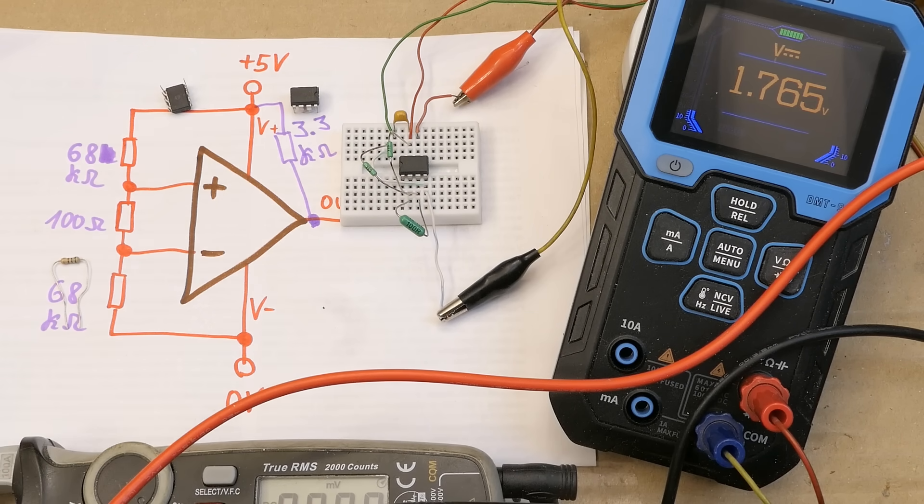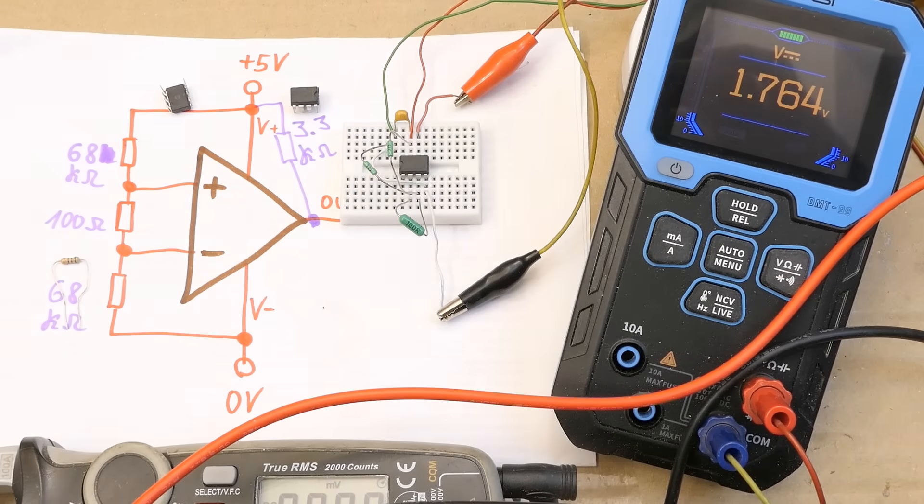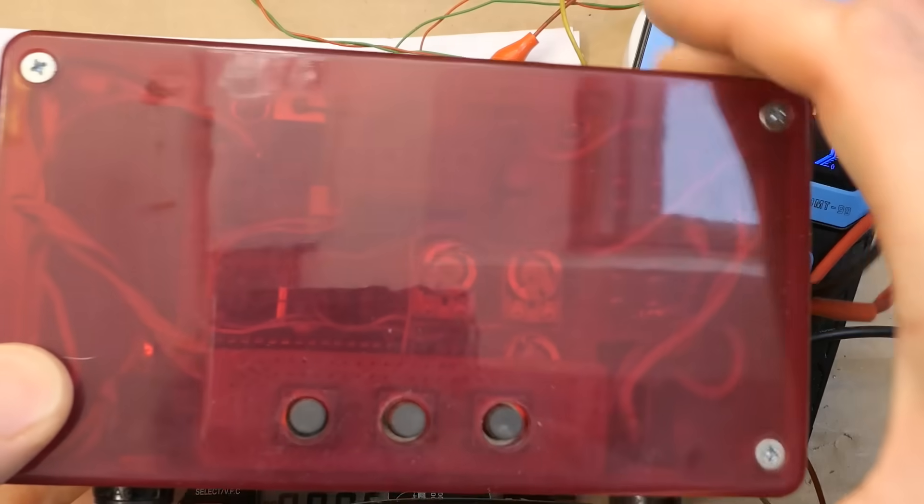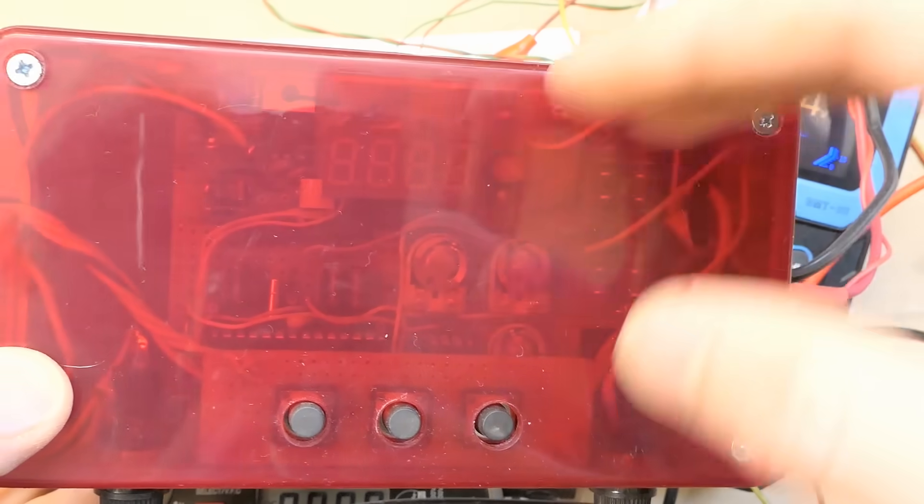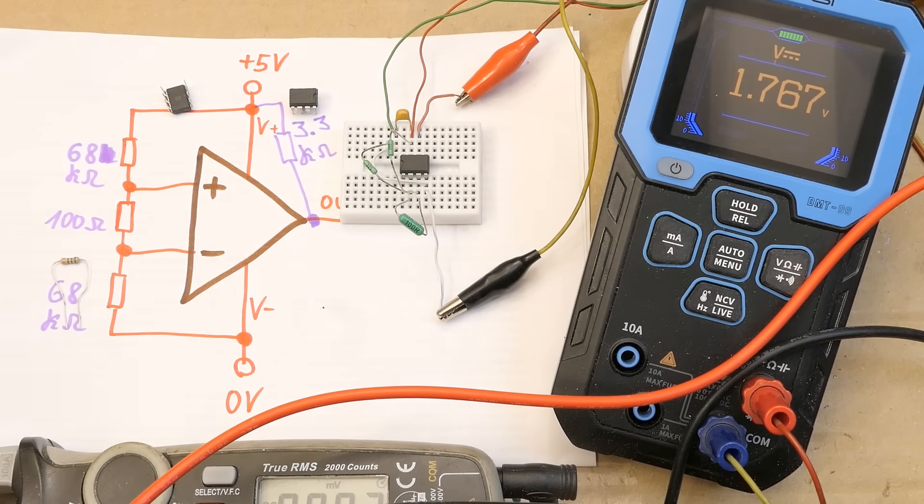Now let's test it near the zero volt rail, which is how it's actually used in my battery analyzer, where it doesn't work. And in the battery analyzer the output is always high, it never goes low. Even when the voltage at the inverting input is higher than the non-inverting input.